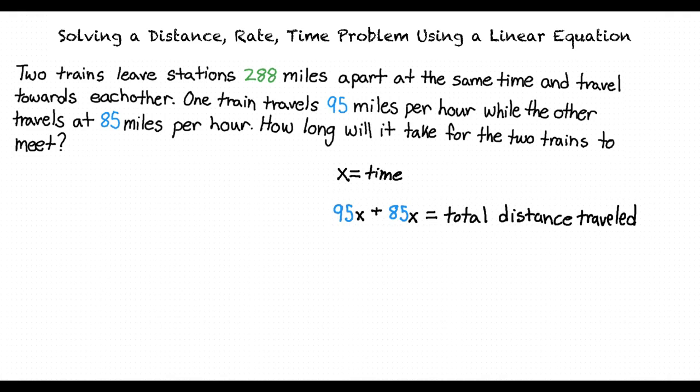If we were to multiply the rate that each train travels by the same time and added them together, we would find the total distance traveled by both trains over a certain time period. And we know that the two trains start 288 miles apart from each other, which is the total distance needed to be traveled by the two trains.